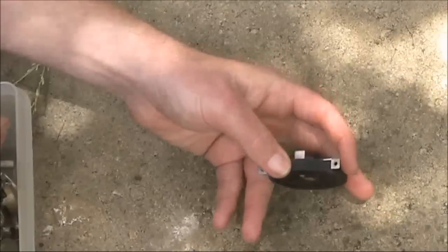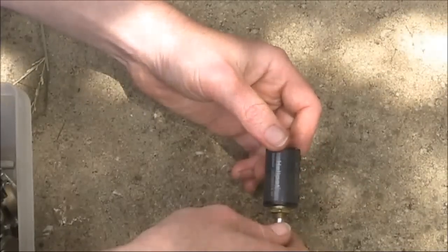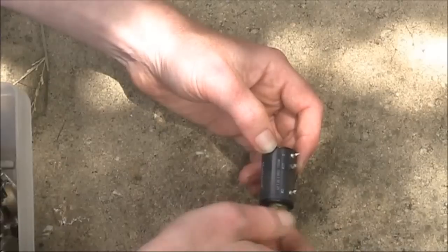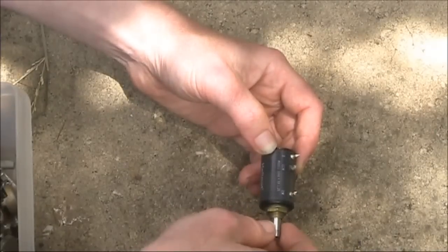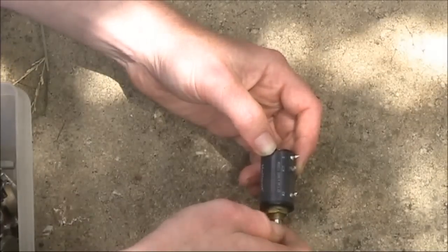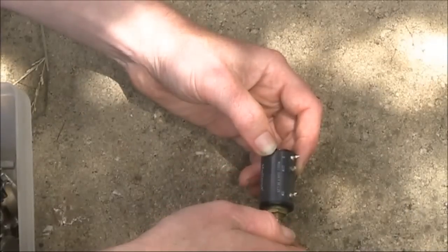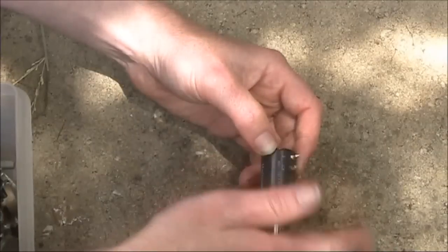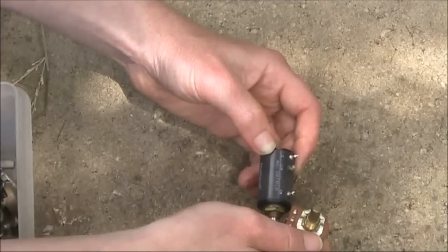This is a real gem, a helipot 10-turn pot by Beckman, commonly used in test instruments where you had to make really fine adjustments. It's also great for use as a tuning control, especially in transceivers where you're using a varactor diode to control the frequency. In that case, you add a 10-turn pot, and that gives you much easier tuning as the whole range is spread over the 10 turns, rather than the three-quarter turn of a standard potentiometer.